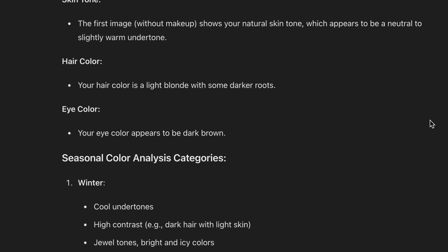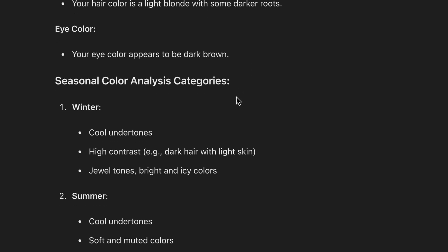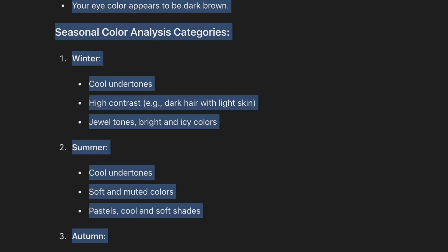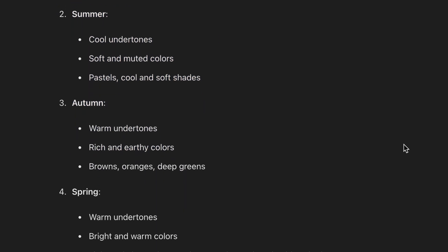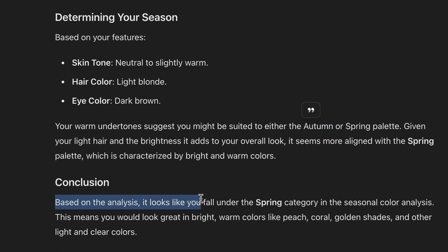Under the analysis of my features, it says I have a neutral to slightly warm undertone. I'm not really sure what 'neutral to slightly warm' means, but the warm undertones were consistent with my previous video when I used hex codes. It reiterates my hair color and eye color, then lists the seasonal color analysis categories — winter, summer, autumn, and spring. At the bottom, it says I'm suited to either the autumn or spring palette, and the conclusion places me more towards the spring category.